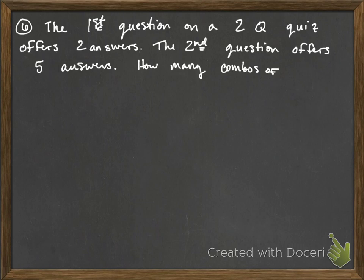Alright, so the way that I'm going to think about this is that question number one has two answers. You have A and you have B. And question two has five answers. So let's say one, two, three, four, and five.